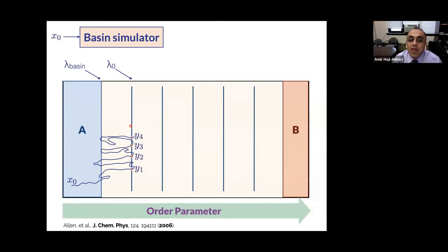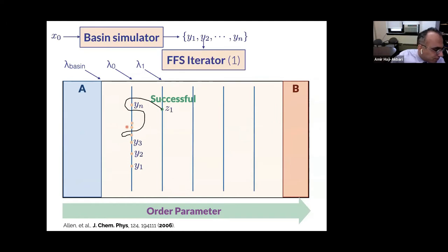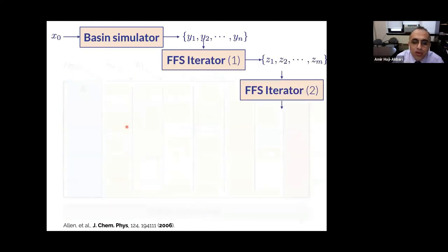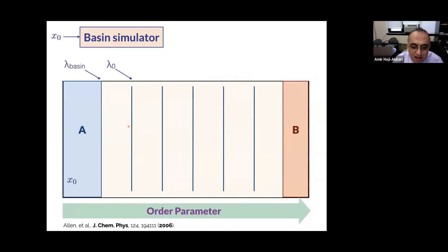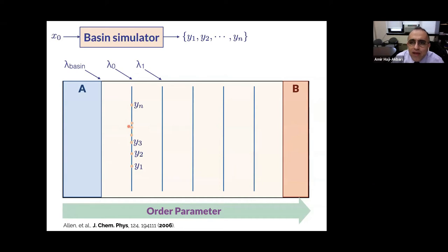Generally speaking, people normalize this flux with a proper measure of the system size. For example, in nucleation, depending on whether you have homogeneous or heterogeneous nucleation, you normalize it with the volume of the system or the surface area of the crystal nucleating substrate. Then you get a bunch of configurations at or close to lambda zero, which you pass on to an FFS iterator.